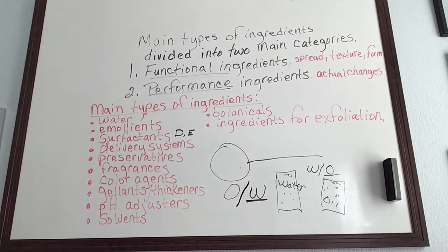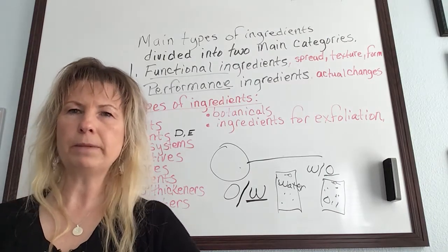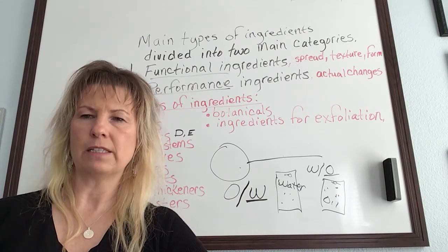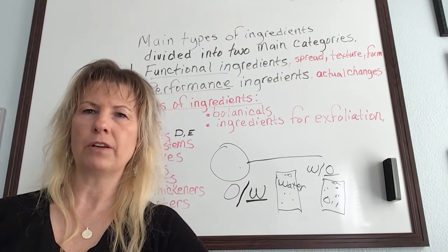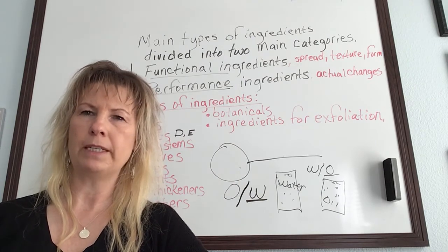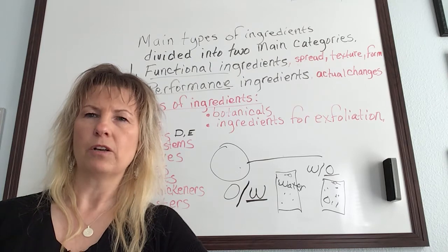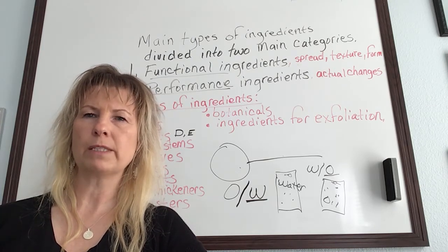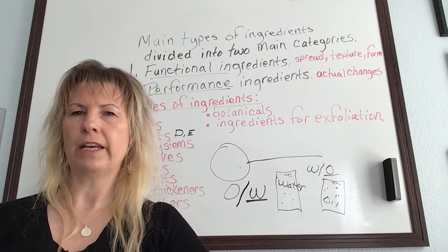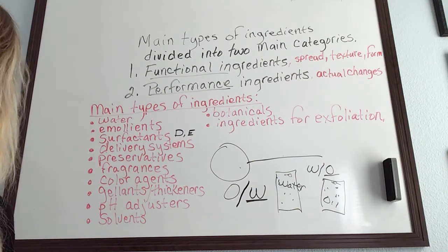Thickeners are functional ingredients used to thicken cosmetics or give them consistency. They also suspend ingredients that are hard to mix. Sources include lipids, emulsifiers, polymers, minerals, and synthetic ingredients. Examples: carbomers — used to thicken creams and commonly found in gel products — carnauba wax, gelatin, silica, stearyl alcohol, and xanthan gum.